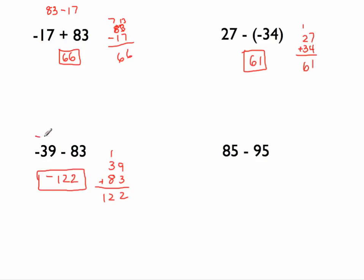You could have also rewritten this as negative 83 plus negative 39, or you could have written it as negative 83 minus 39. That's all we're doing here, is changing the order of negative 83 and negative 39.